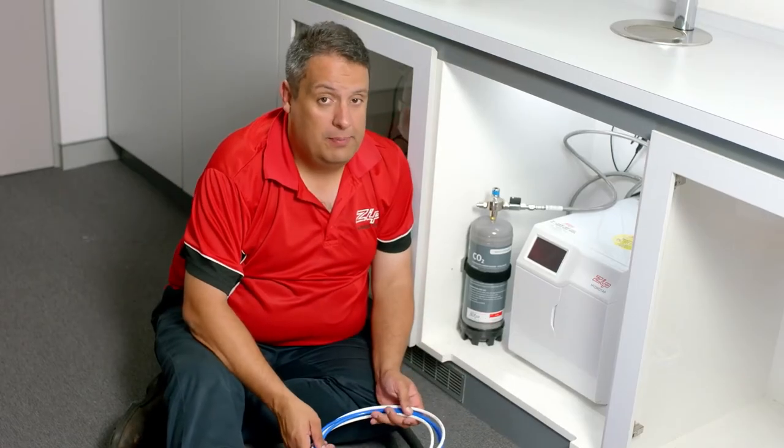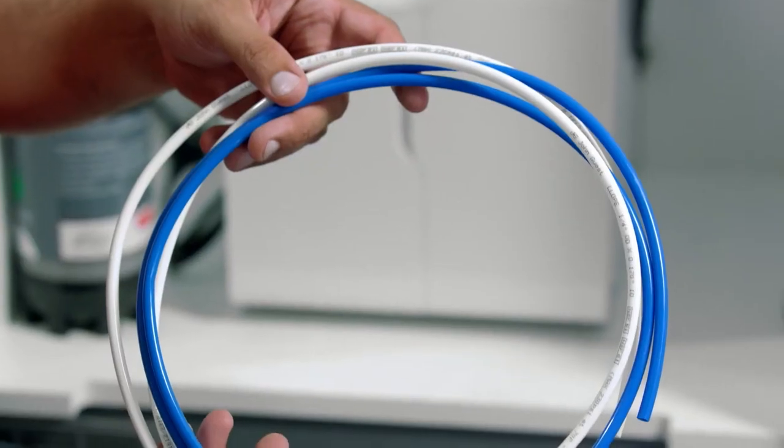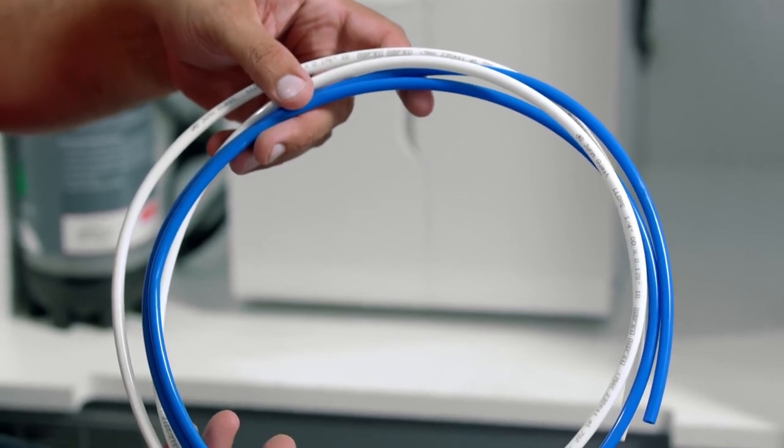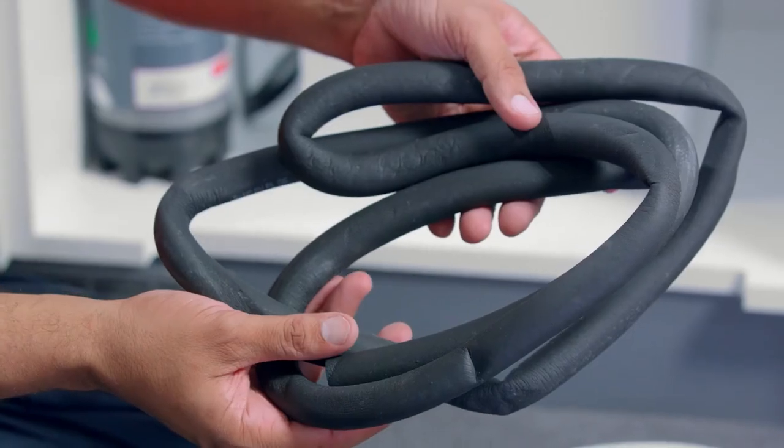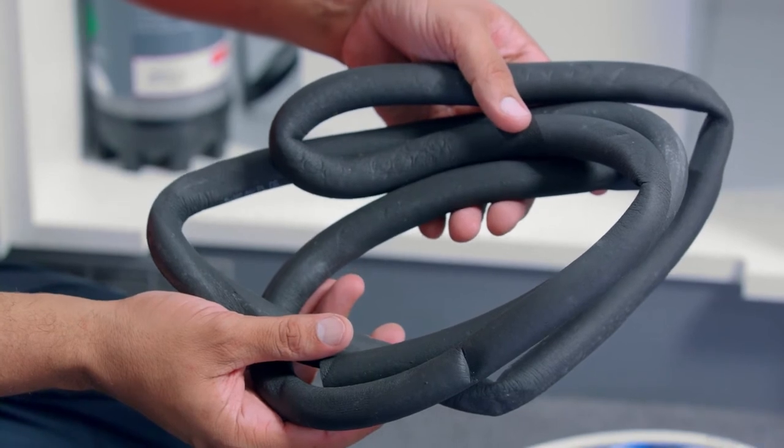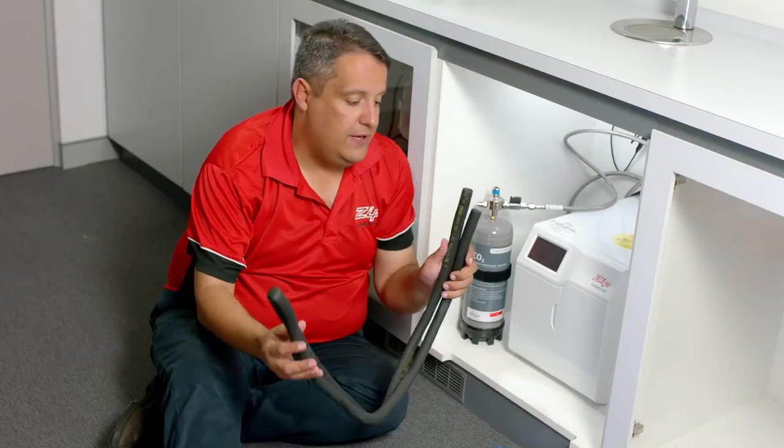Supplied with the HydroTap is a blue and white hose. These are for your sparkling out and your chilled out. Also in the box, you will find insulation which is to cover the white and blue hoses. To fit, split your insulation in half.